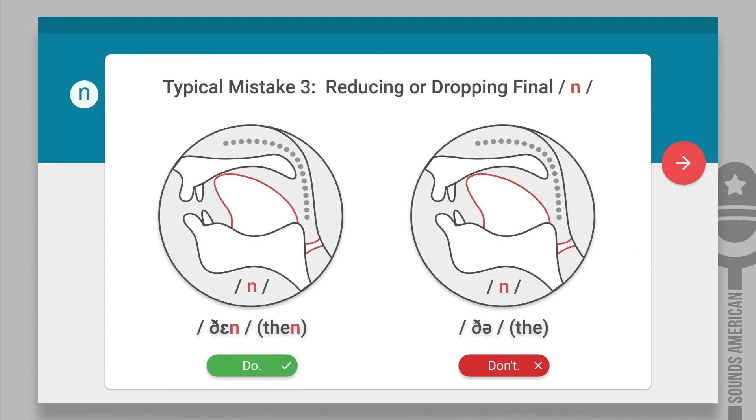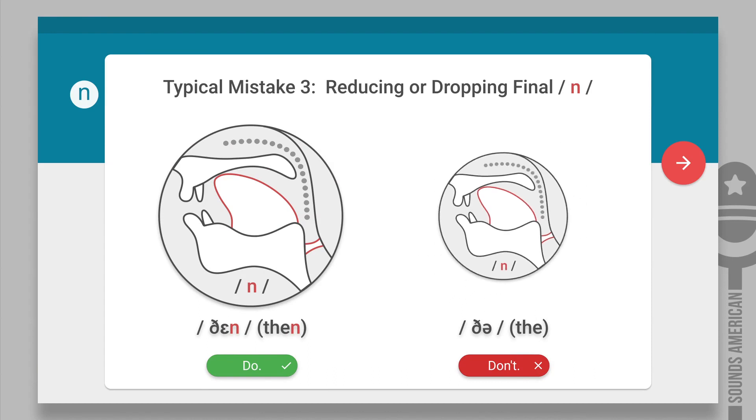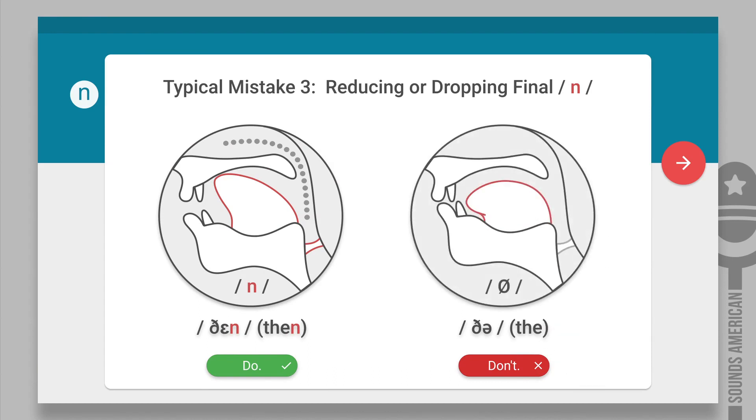Another typical problem is that the n is reduced, or even dropped at the end of words. Then, the. To make sure you know how to pronounce the n like an American, let's find out how to make it, and then practice it in words.